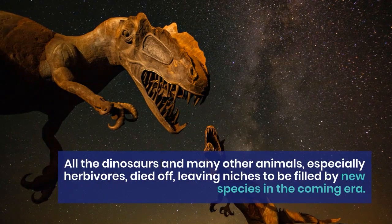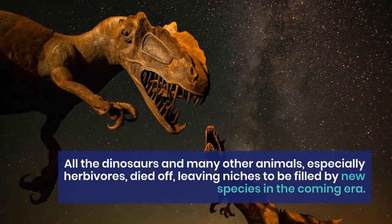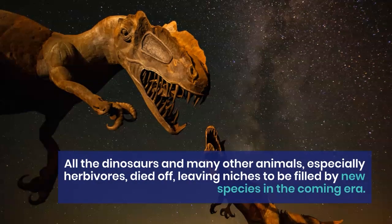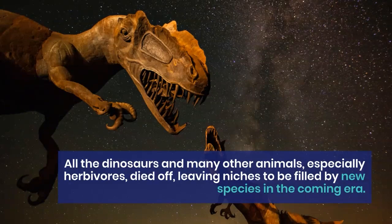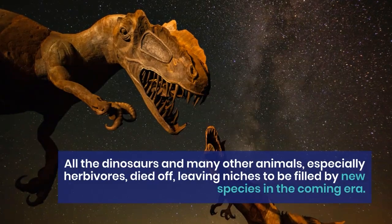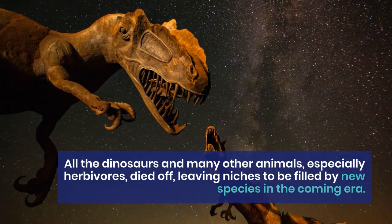Many lush green plants sprouted all over the earth during the Mesozoic era. Another mass extinction marked the end of this era — all the dinosaurs and many other animals, especially herbivores, died off, leaving niches to be filled by new species in the coming era.